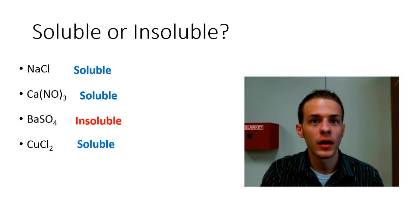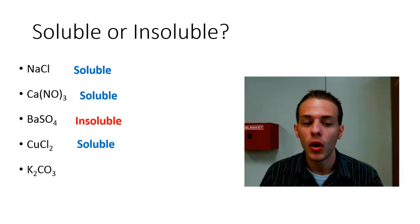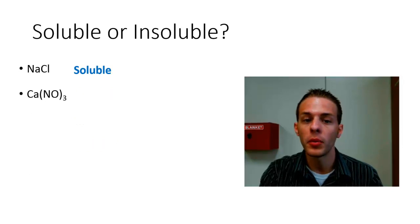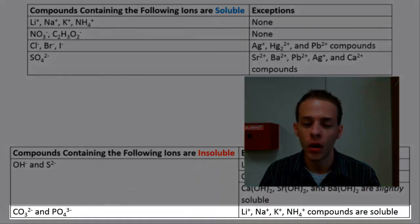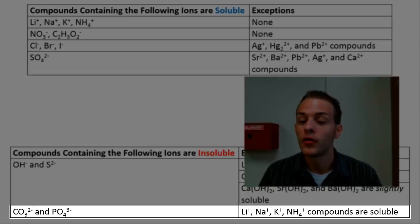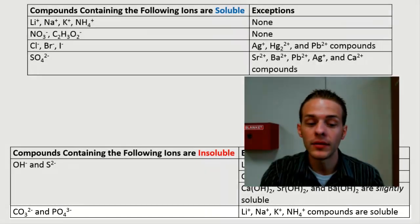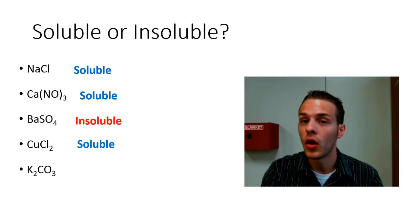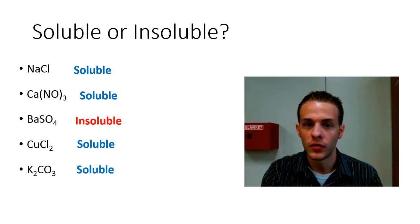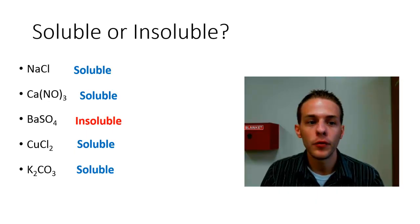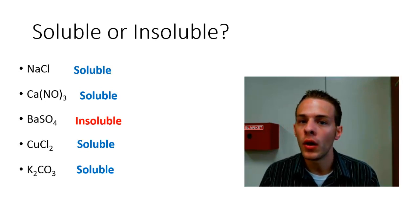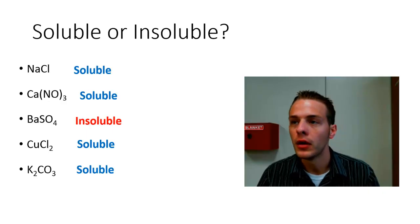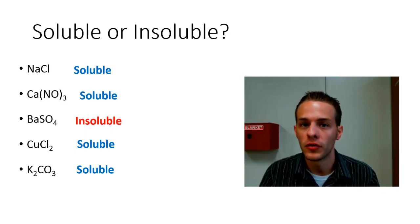One more example: potassium carbonate. The solubility rule for carbonates says they are generally insoluble; however, when carbonates pair with lithium, sodium, potassium, or ammonium, they are soluble. Potassium carbonate satisfies that exception, so potassium carbonate is soluble in water. The process is: look at the ions in the formula, refer to the solubility rules, and check the exceptions.